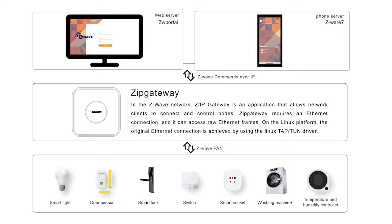In the Z-Wave network, ZIP Gateway is an application that allows network clients to connect and control nodes. The IP Gateway requires an Ethernet connection, and it can access raw Ethernet frames. On the Linux platform, the original Ethernet connection is realized by using the Linux TAP TUN driver.